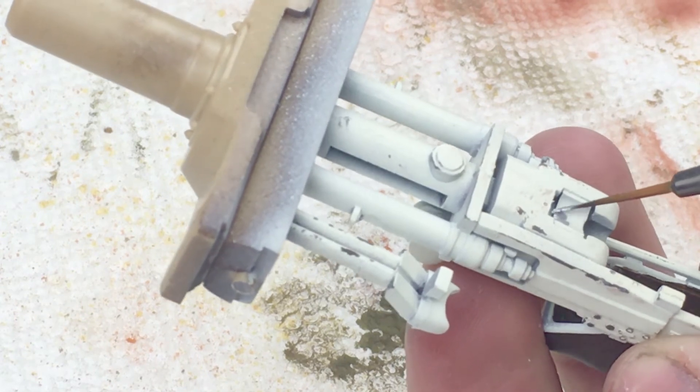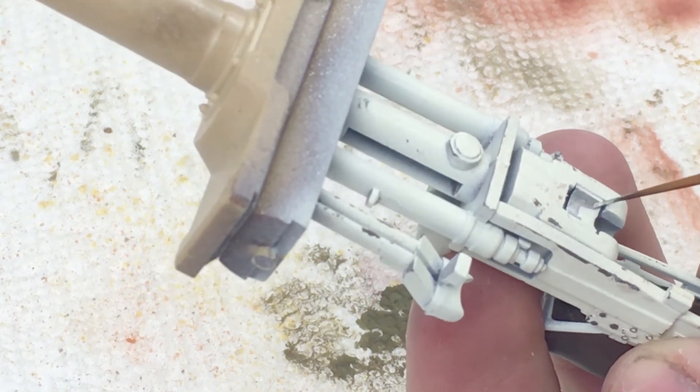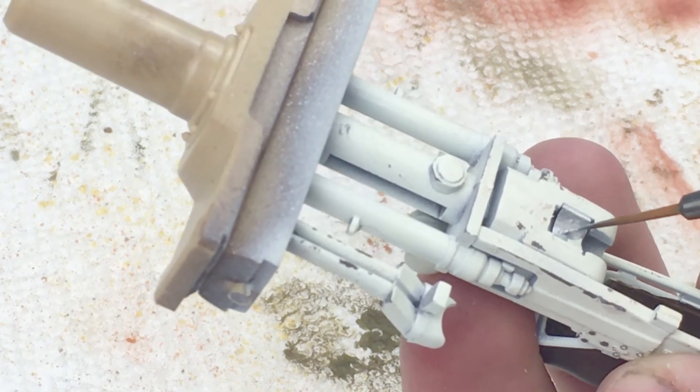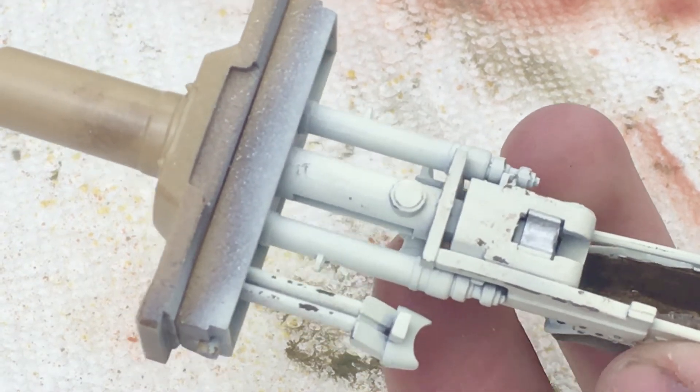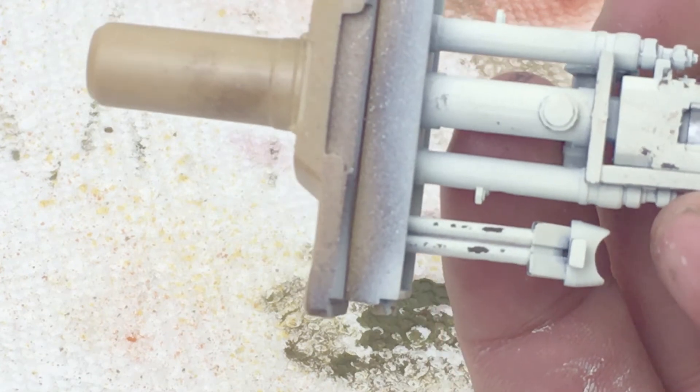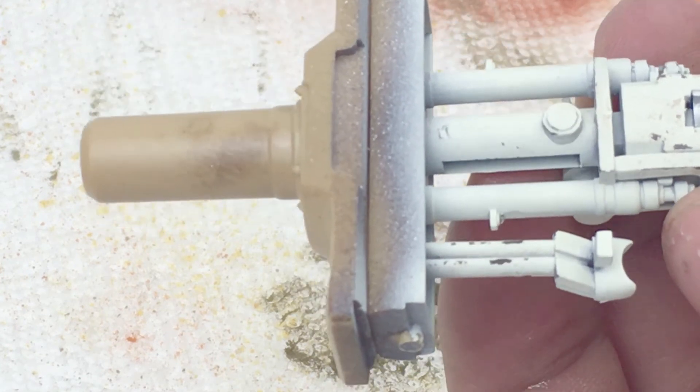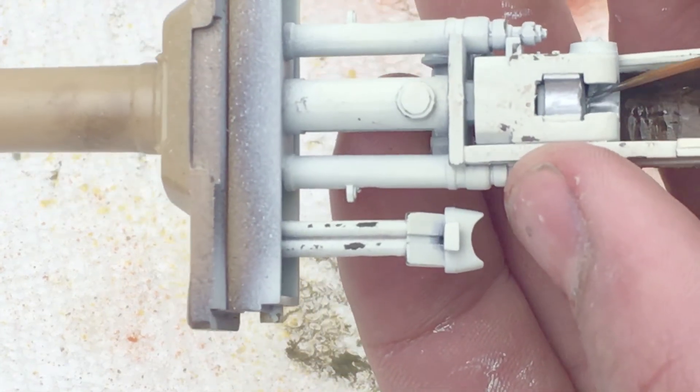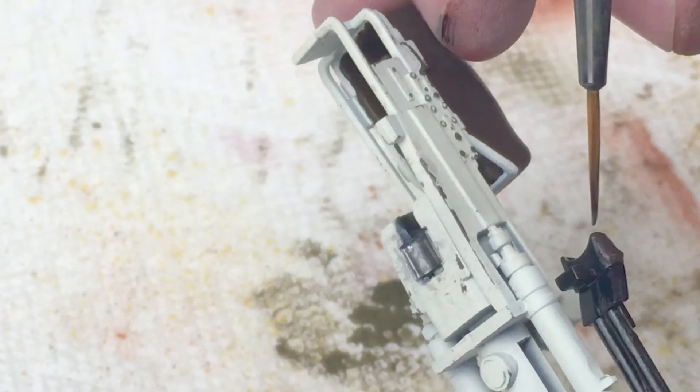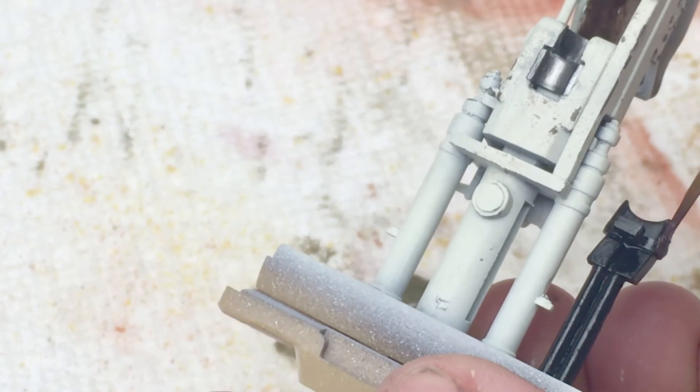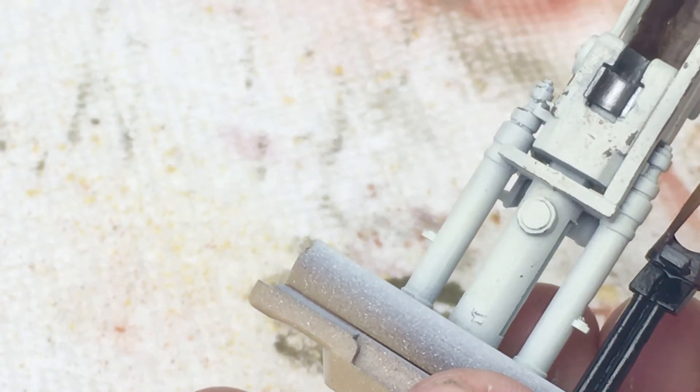After that I painted the breech with silver. Not much to say there, I just used Vallejo Air and it has really good coverage properties so it's really easy to brush on. While that was drying I painted the leather cover for the gunner's eyes German camo black brown.